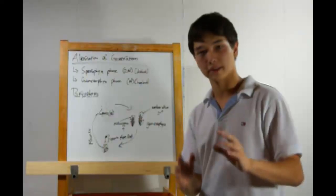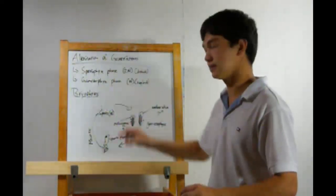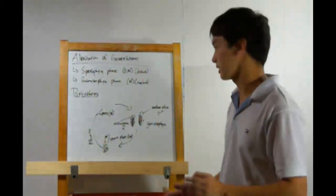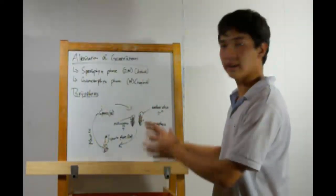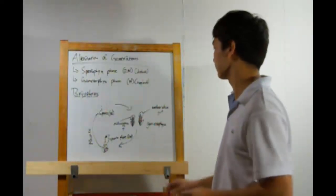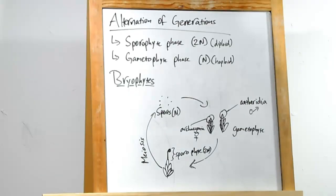Let's look at the alternation of generations for the different groups of plants, starting with bryophytes, the oldest of all forms of plants. The dominant generation here is the gametophyte generation. Here we'll have both male and female gametophytes.